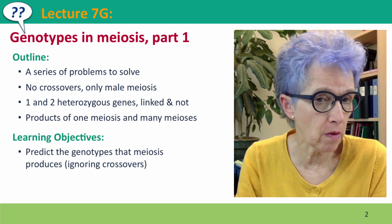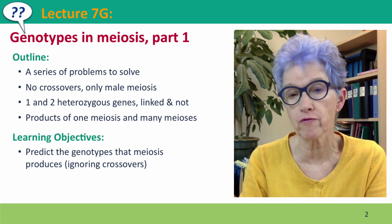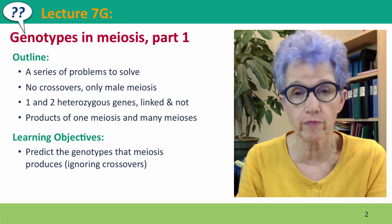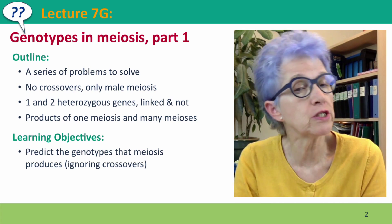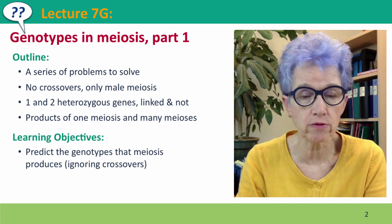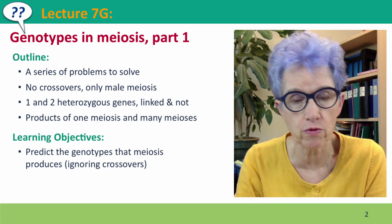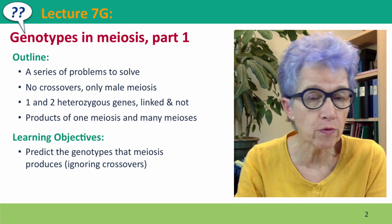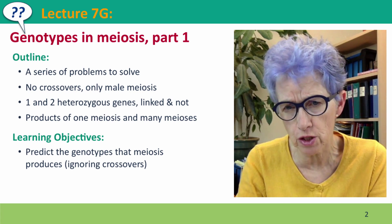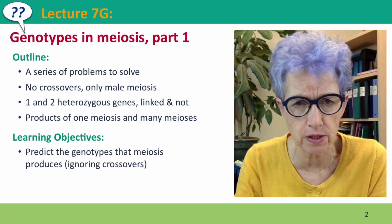These are simple problems — no crossovers, only male meiosis. So we have all four gametes, all four products of meiosis to consider. We'll consider one and two genes, homozygous or heterozygous, on the same chromosome or on different chromosomes. And we'll consider whether we're thinking about the products of one meiosis or the pool of products of many meioses.